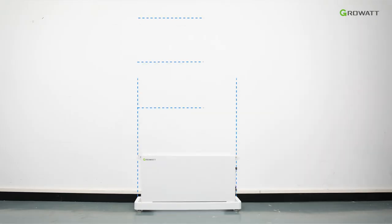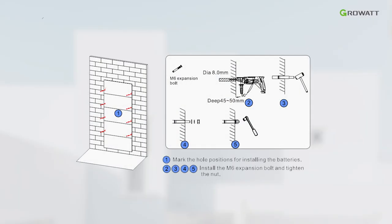Move away the second battery. Determine the hole positions for mounting the remaining batteries and mark them. Drill with an 8 mm diameter alloy bit. The hole depth 45 mm to 50 mm. Install the M6 expansion bolts.